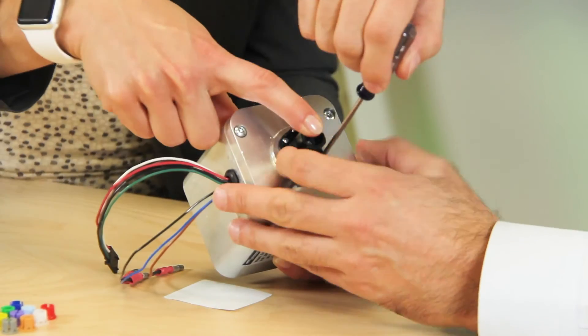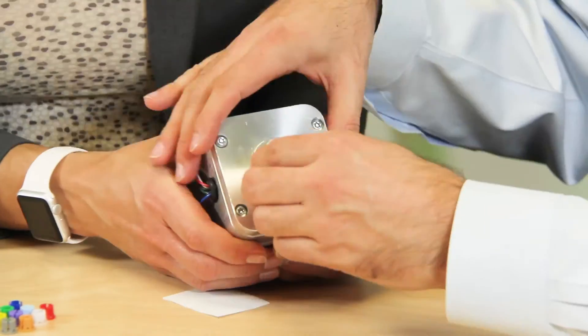Next, we take the AMT31 encoder housing and snap it into place on the base. Then we take the tool C, the centering tool once again, to set the height of the rotor inside the encoder.